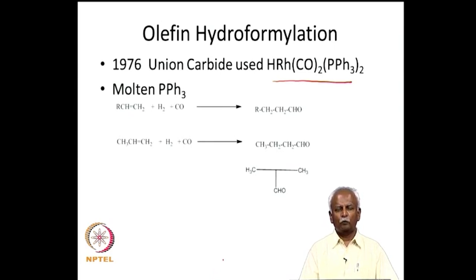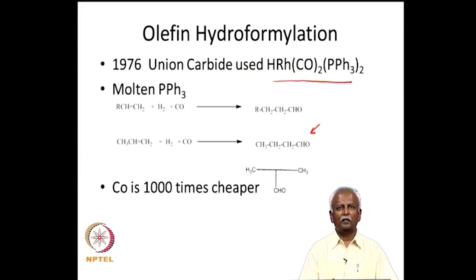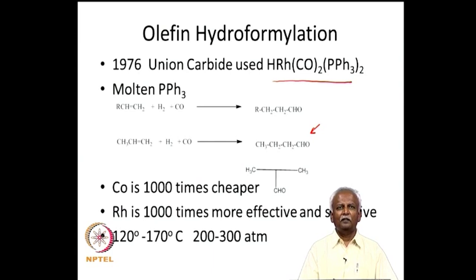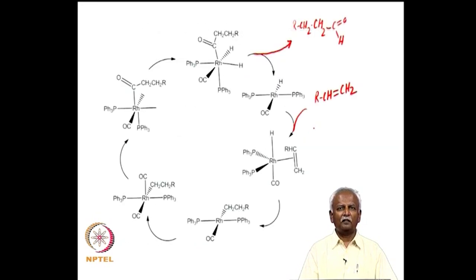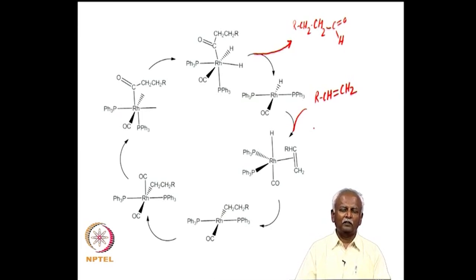Union Carbide found they could convert propene to normal butyraldehyde in very good yield. Although cobalt is 1000 times cheaper, rhodium is 1000 times more effective, making it more economical in the long run. The temperatures and pressures are again very high to drive the reaction to the right. I will now write the catalytic cycle based on rhodium; an analogous reaction with cobalt can be very easily written.